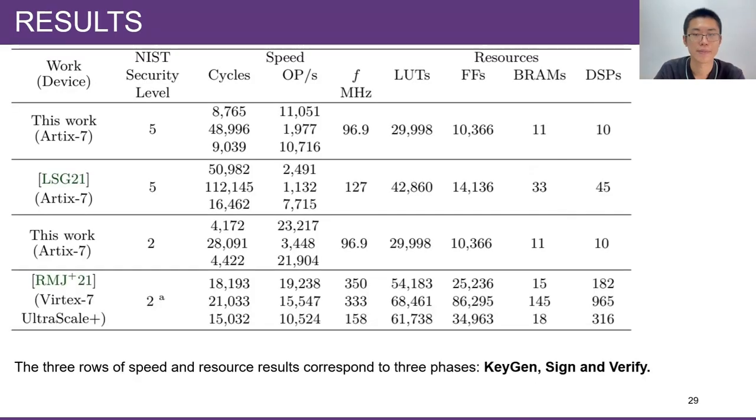Next, I am going to show you a brief implementation result and comparison. The three rows of speed results correspond to three phases: key generation, signing, and verification. The listed related works are two most efficient hardware implementations of DILITHIUM when this work was published. The first one is a compact implementation by Land, Sestridge, and Gneysu. The second one is a high-throughput implementation by Ricci, Malina, Jedlicka, and others.